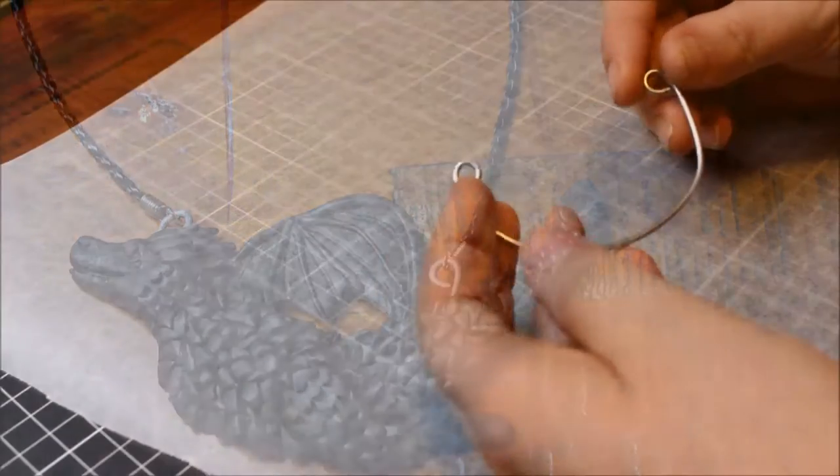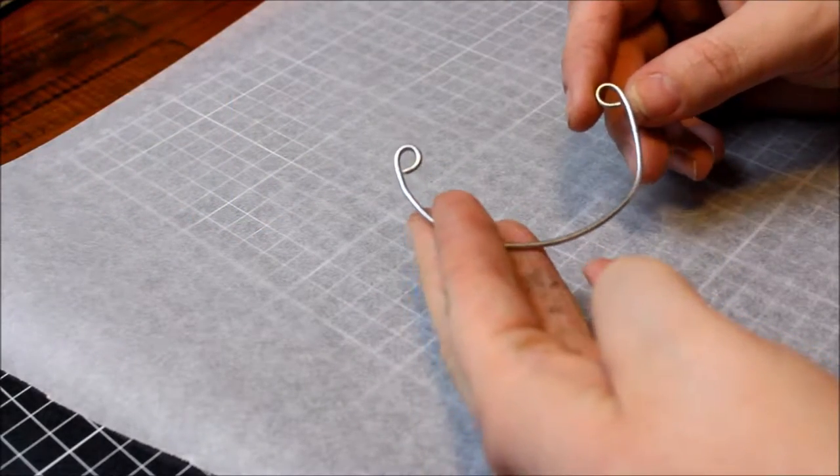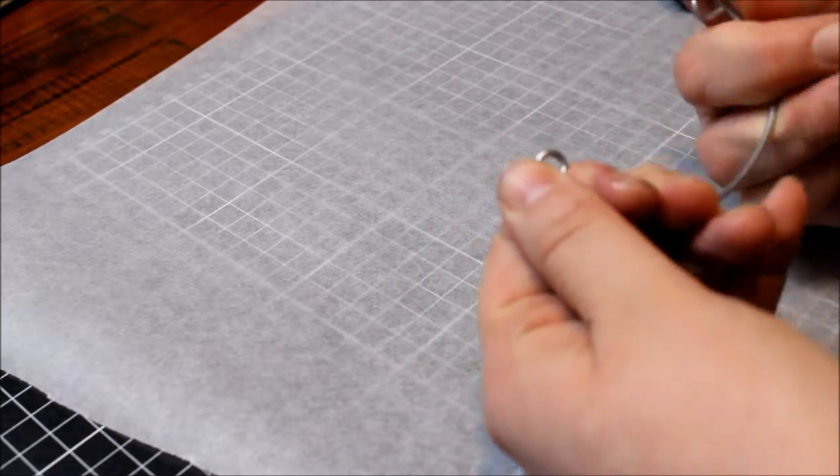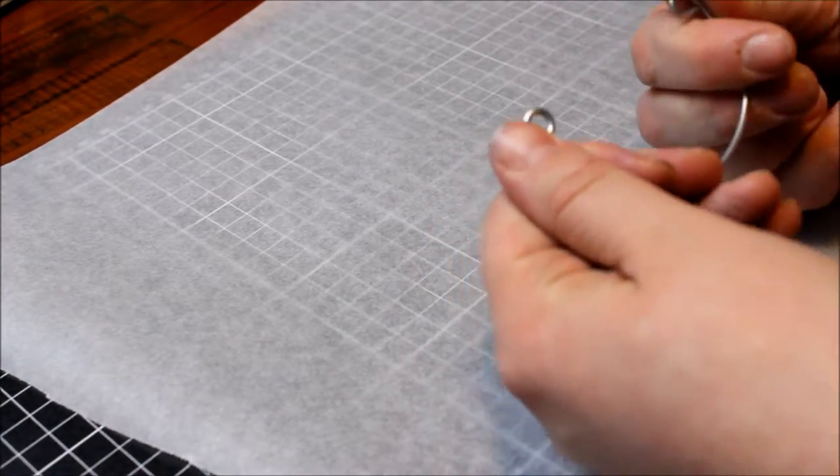To start with, you'll need some wire that you just bend into what I'm calling a smiley face, twisting the ends over to create little loops on each end. This is going to be the base of our little dragon.